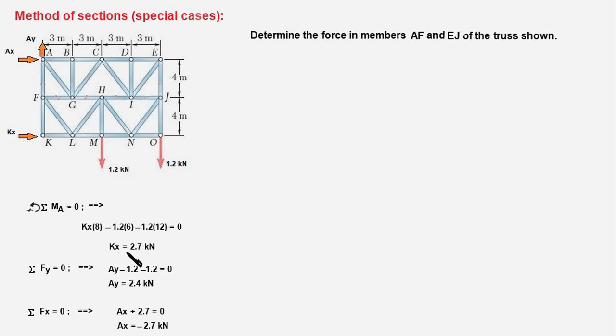And next from the equilibrium equation sigma FY equal to 0 will get AY equal to 2.4 kilonewtons, and sigma FX equal to 0 would give AX equal to minus 2.7 kilonewtons.